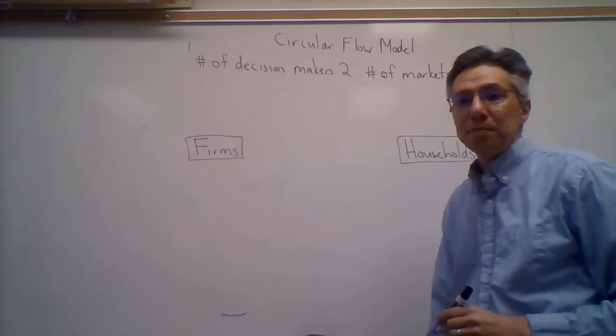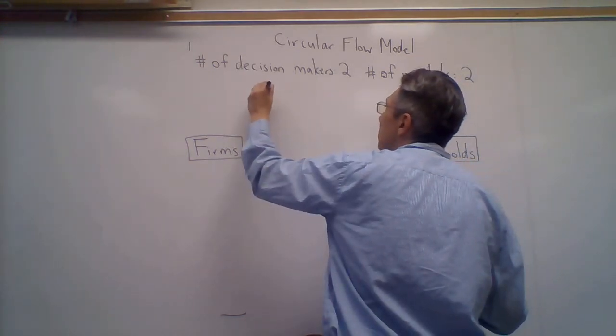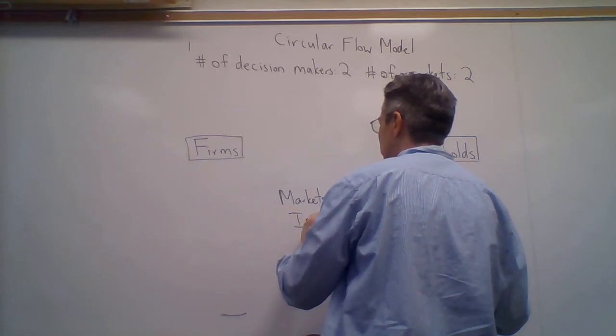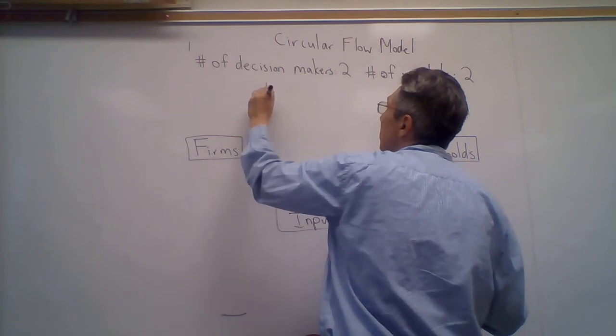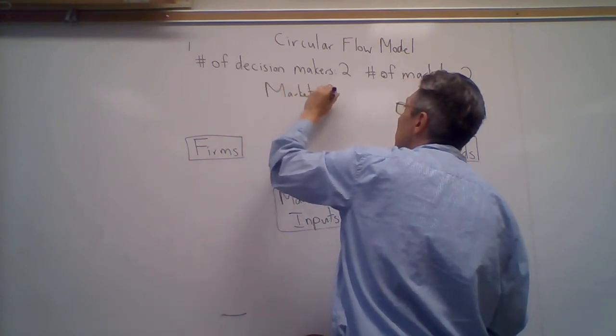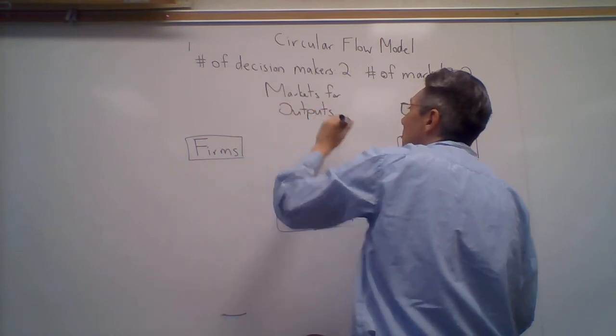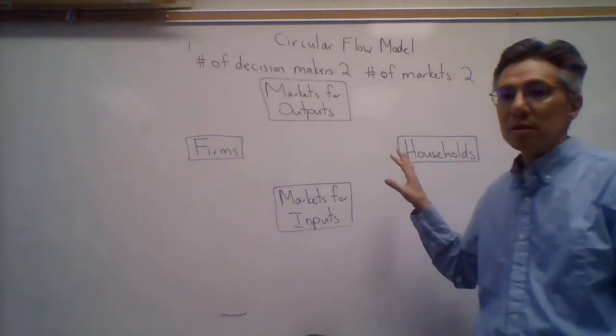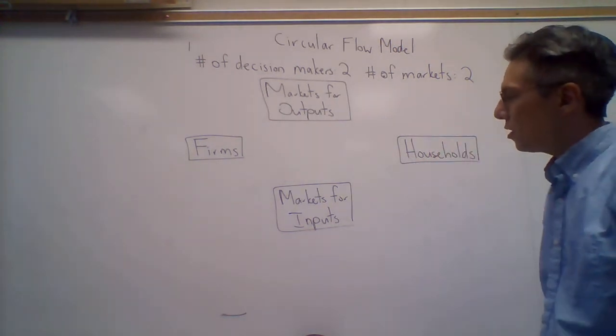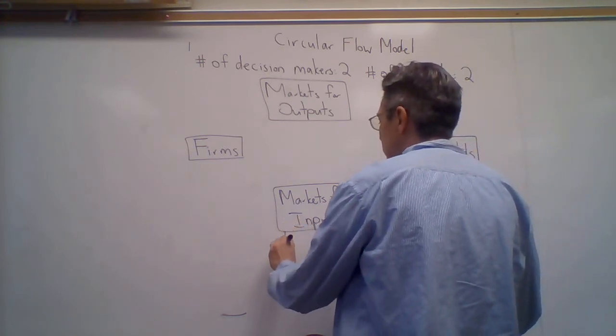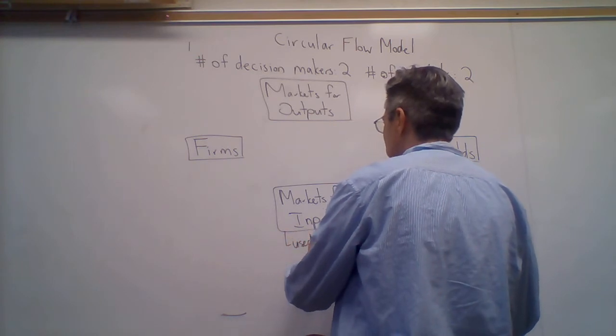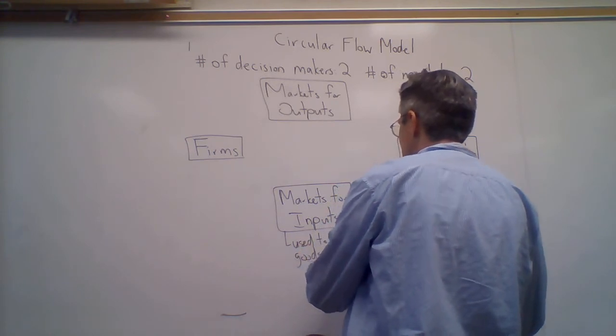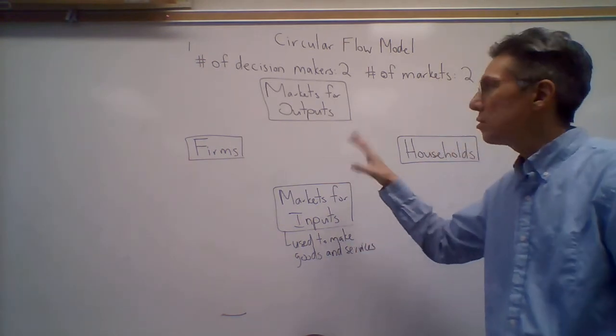In terms of the markets, we have two: the markets for inputs and the markets for outputs. The inputs are basically what are used to make goods and services. Then the outputs just refer to those goods and services.